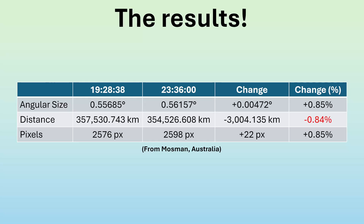Now to be fair, that's a pretty lucky result. I could easily have been off by one pixel in any of those measurements — if I only got 21 pixels bigger the change would be 0.82%, not 0.85%, or 20 pixels would give 0.78%. So there you go, just a quick one and really just another data point that confirms the globe. See you.